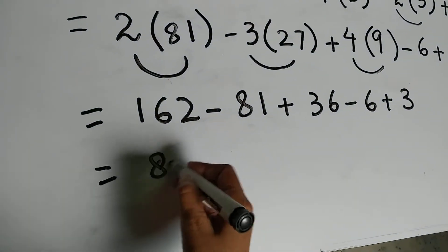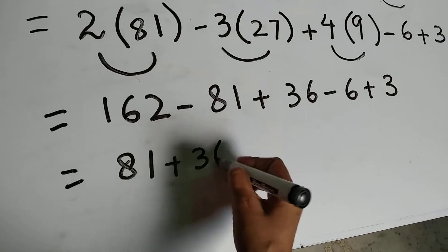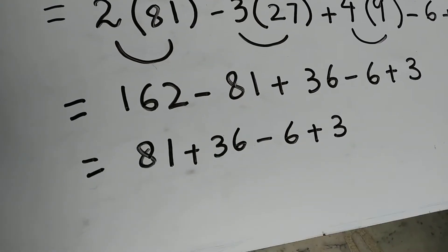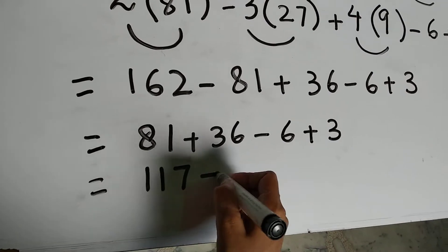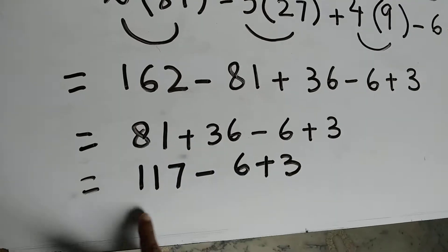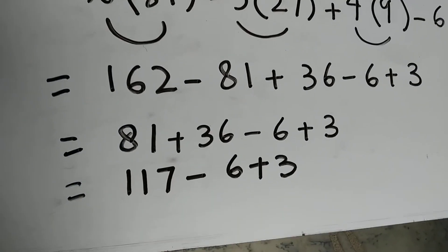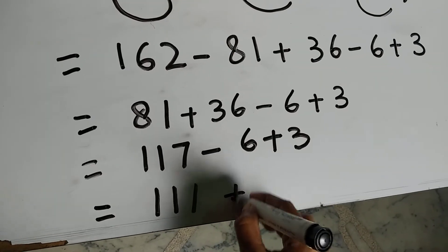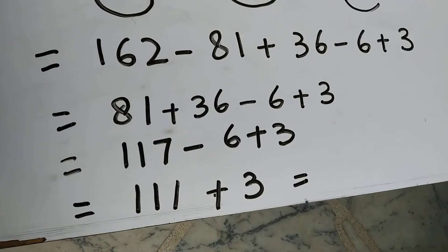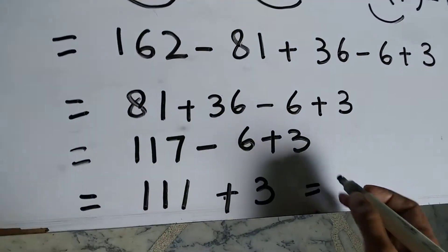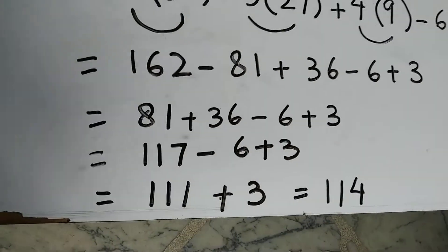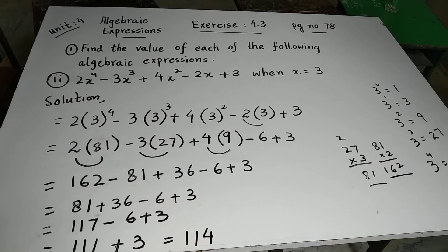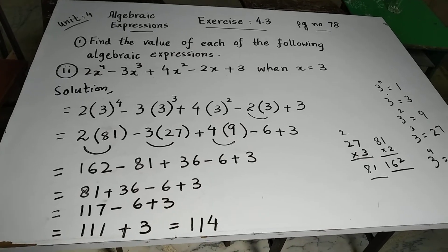We get 162 minus 81, which gives 81, plus 36, minus 6, plus 3. Then 81 plus 36 is 117, minus 6 gives 111, plus 3 gives 114. So the answer to Question 2, Exercise 4.3 part 2, is 114.